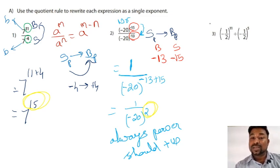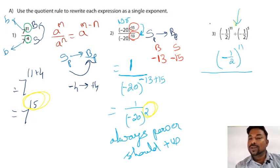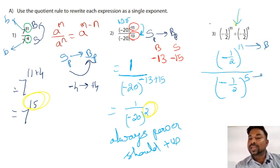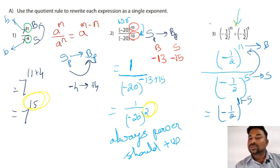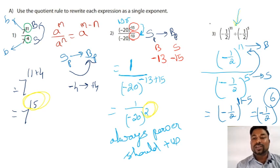Now the third sum: here the division symbol is given instead of fraction form, so we convert it. It becomes minus 1 by 2 to the power 11, whole divided by minus 1 by 2 to the power 5. Now 11 is bigger and 5 is smaller. We transfer: minus 1 by 2 to the power 11, and plus 5 from the bottom goes up and becomes minus 5. So the answer is minus 1 by 2 to the power 6. The power is positive — correct.